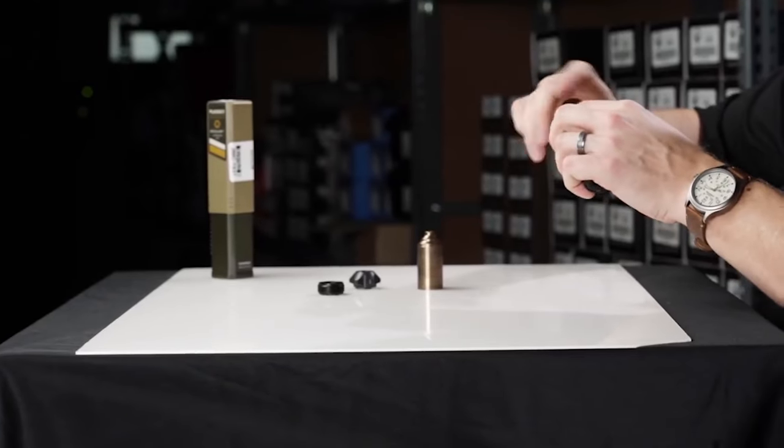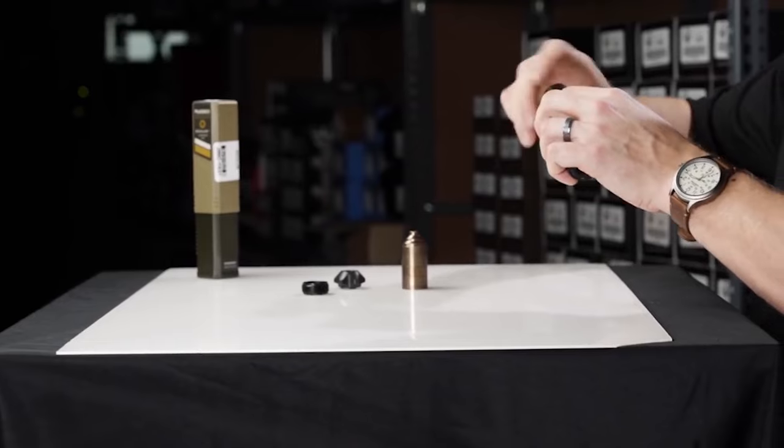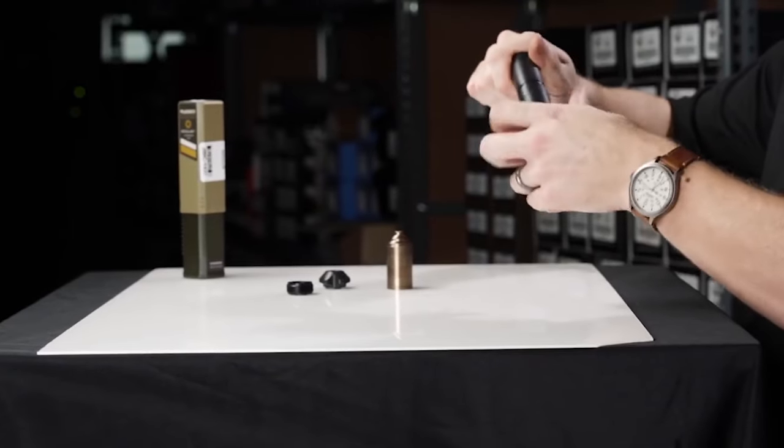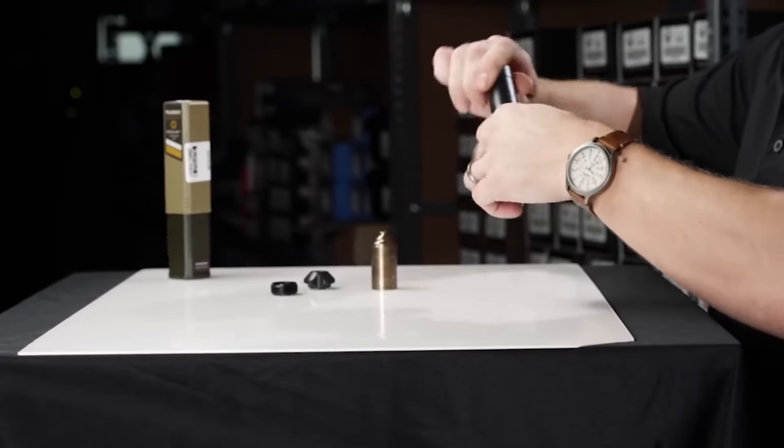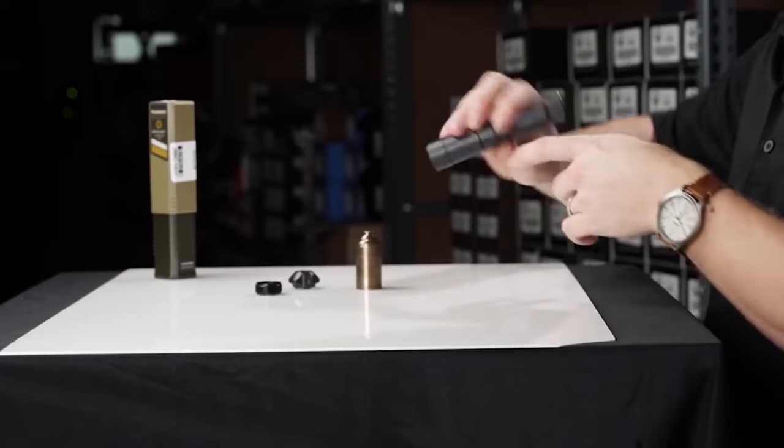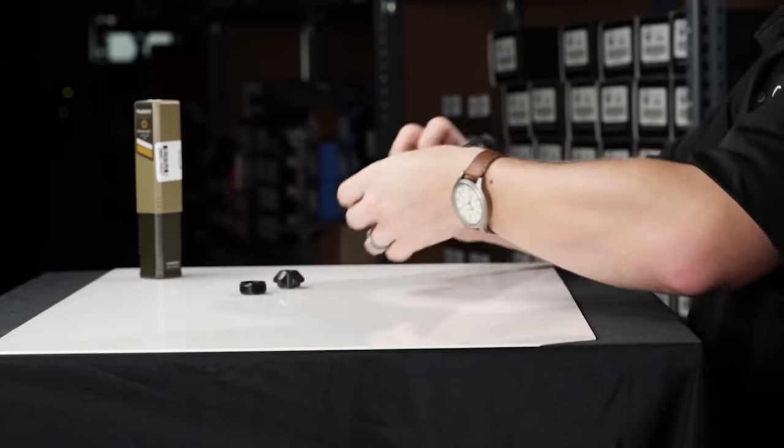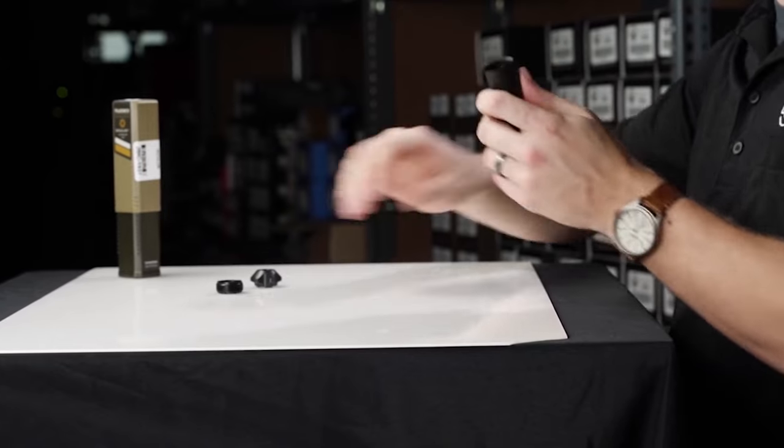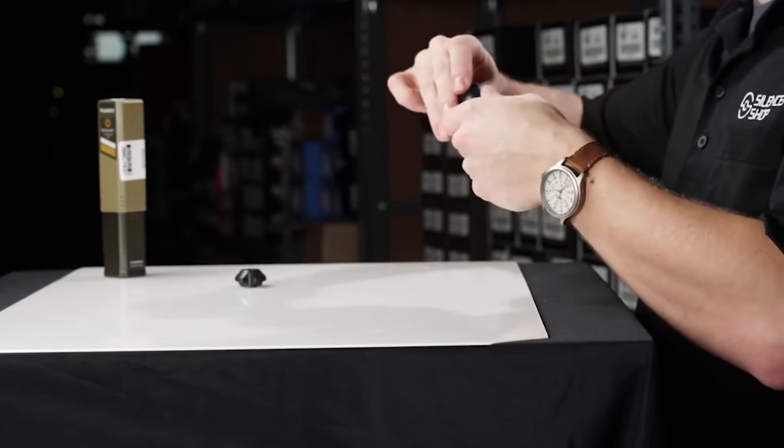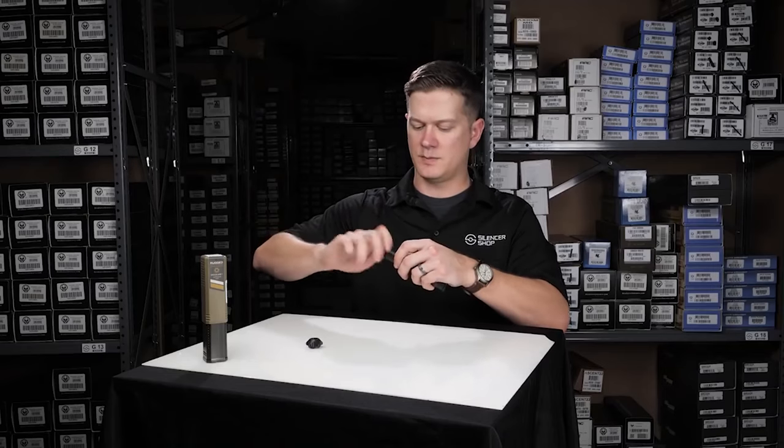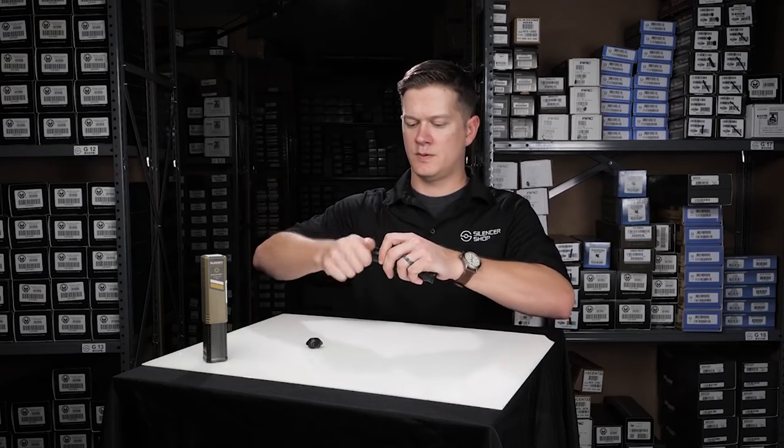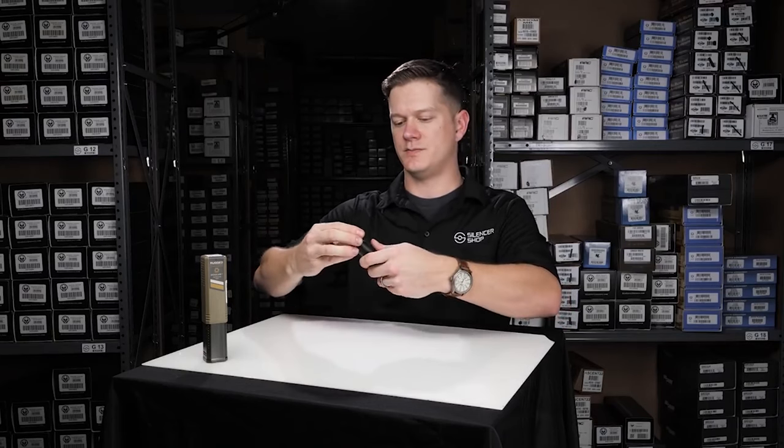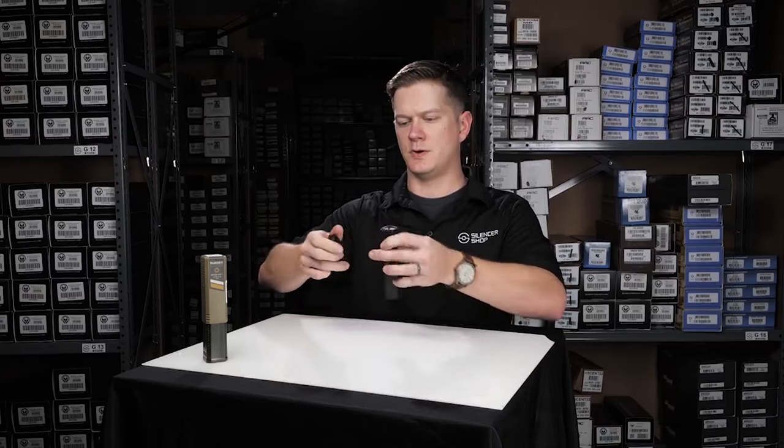Replace the extension tube, and then slide the extension baffles into the extension tube. These are freely rotating. The cap goes back on the front. With a quick snug from the wrench, you're good to go.